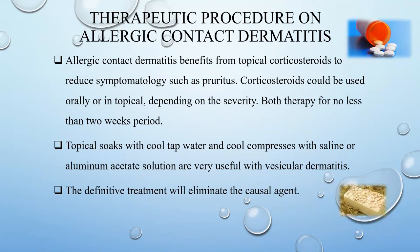Therapy procedures for allergic contact dermatitis. Allergic contact dermatitis benefits from topical corticosteroids in order to reduce symptomatology such as pruritus. It can be used orally or topically depending on the severity, and both therapies should never be used for more than two weeks. Topical soaks with cold tap water, cold compresses, and aluminum saline can be used to reduce vesicular dermatitis. The definitive treatment is elimination of the causal agents.